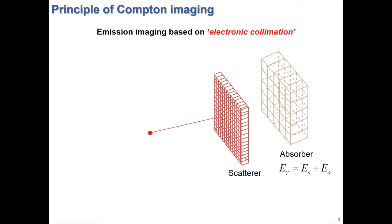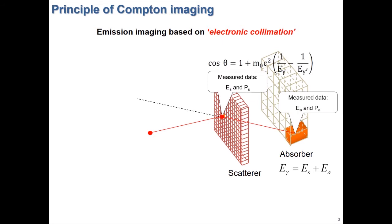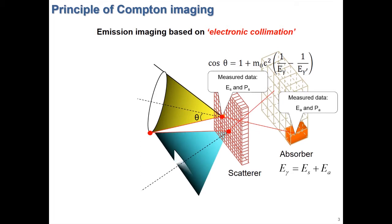When a gamma ray undergoes a Compton scattering and then is completely absorbed, from these position and energy information we can get a conical surface which contains the source location on its surface. By overlapping these conical surfaces, we can see the location of radiation sources.